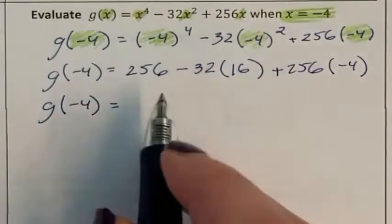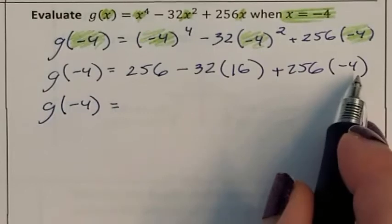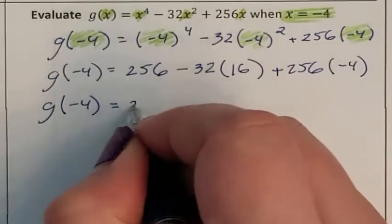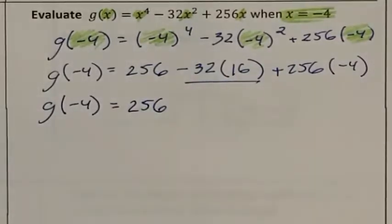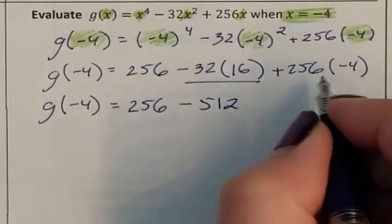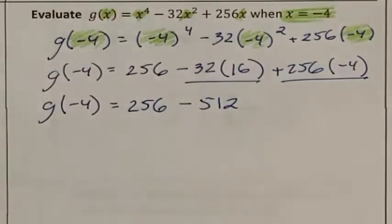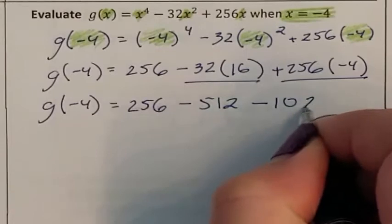Order of operations now says I need to go straight through and multiply from left to right as I see it. I need to do negative 32 times 16, so I have minus 512. I need to do positive 256 times a negative 4, so I am now subtracting 1024.